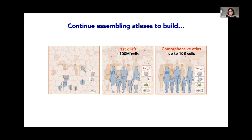We're at the 100 million cell mark — the goal we set ourselves at the five-year mark, and we exceeded it. That represents our draft first version atlas, with the next five years devoted to integrating this atlas and working towards a comprehensive atlas at the cellular and spatial scale, spanning the needed human diversity.